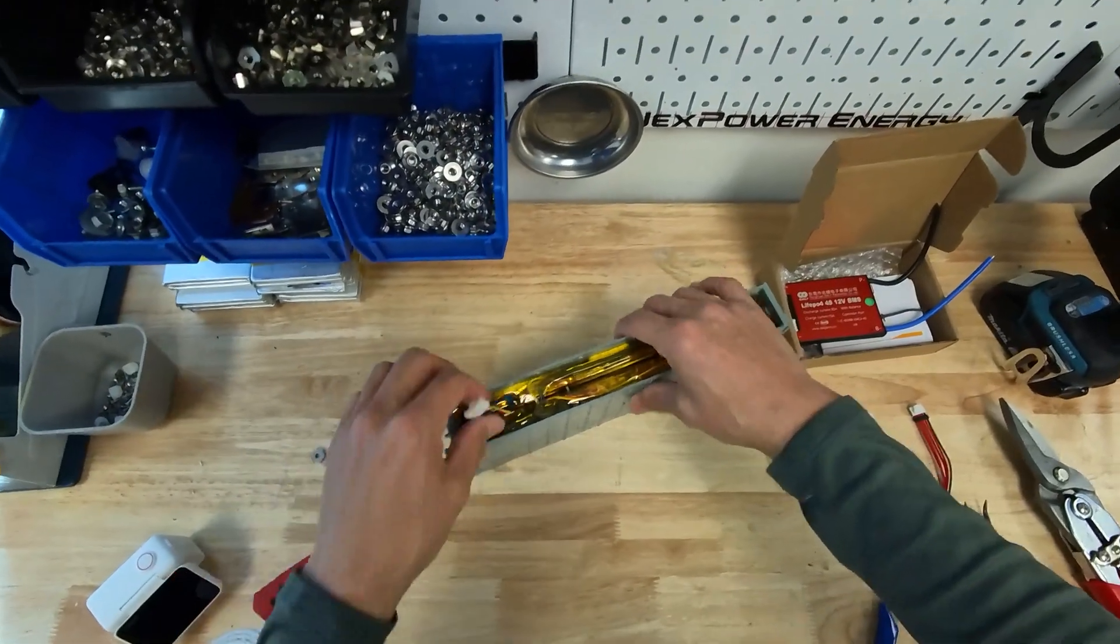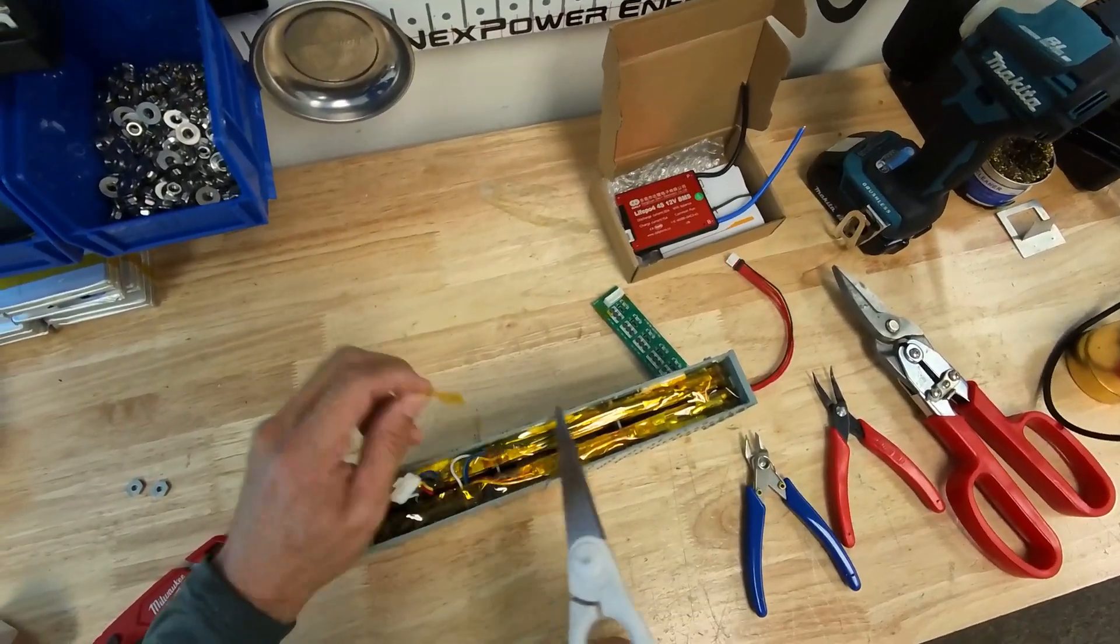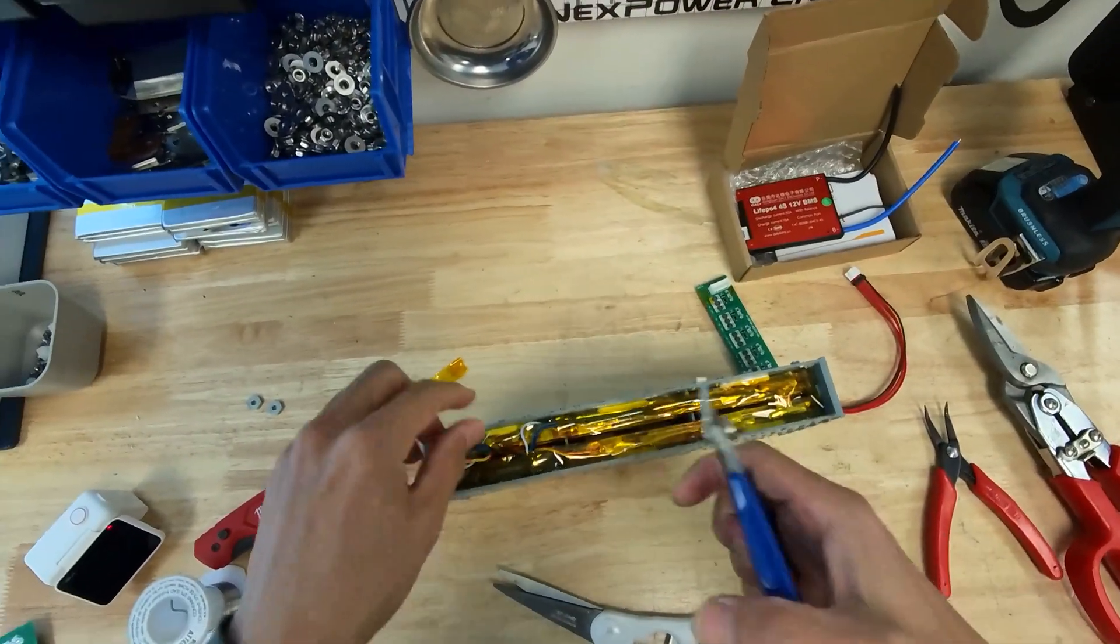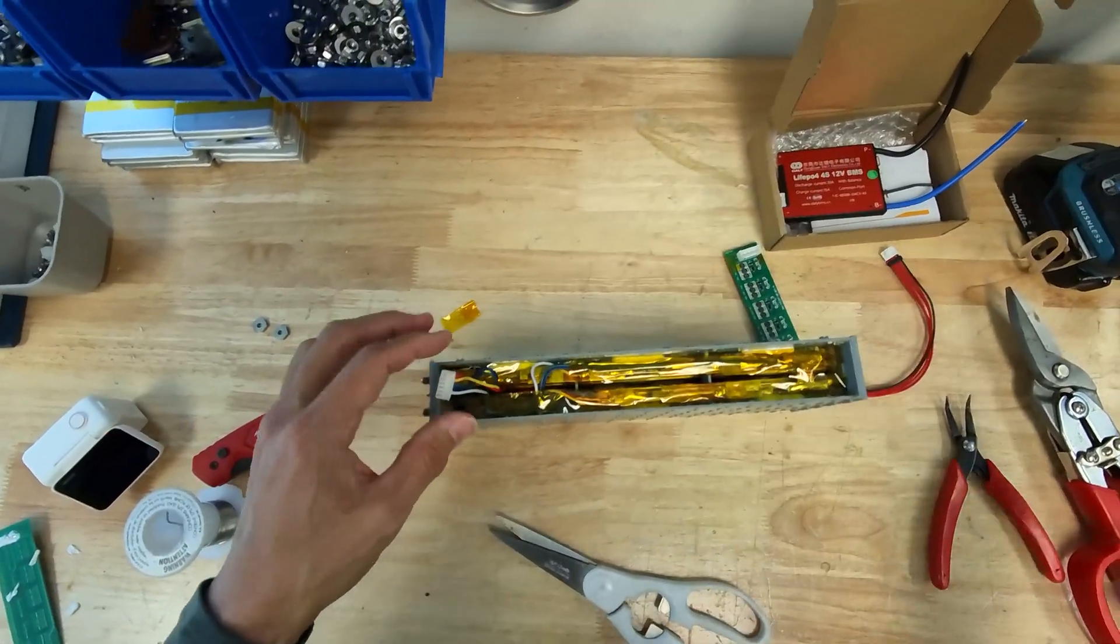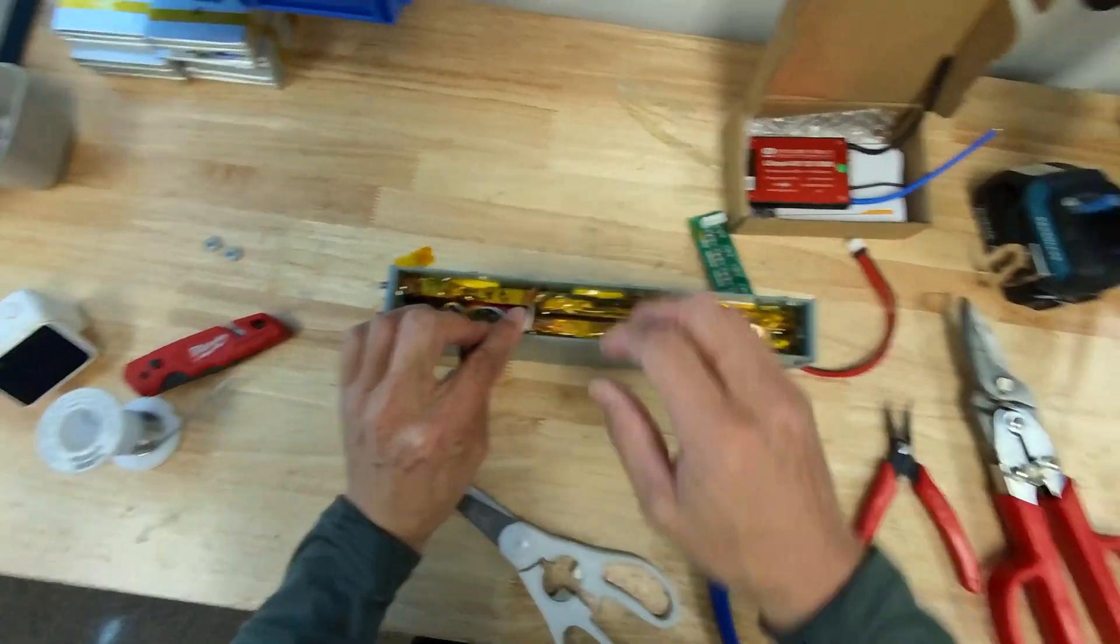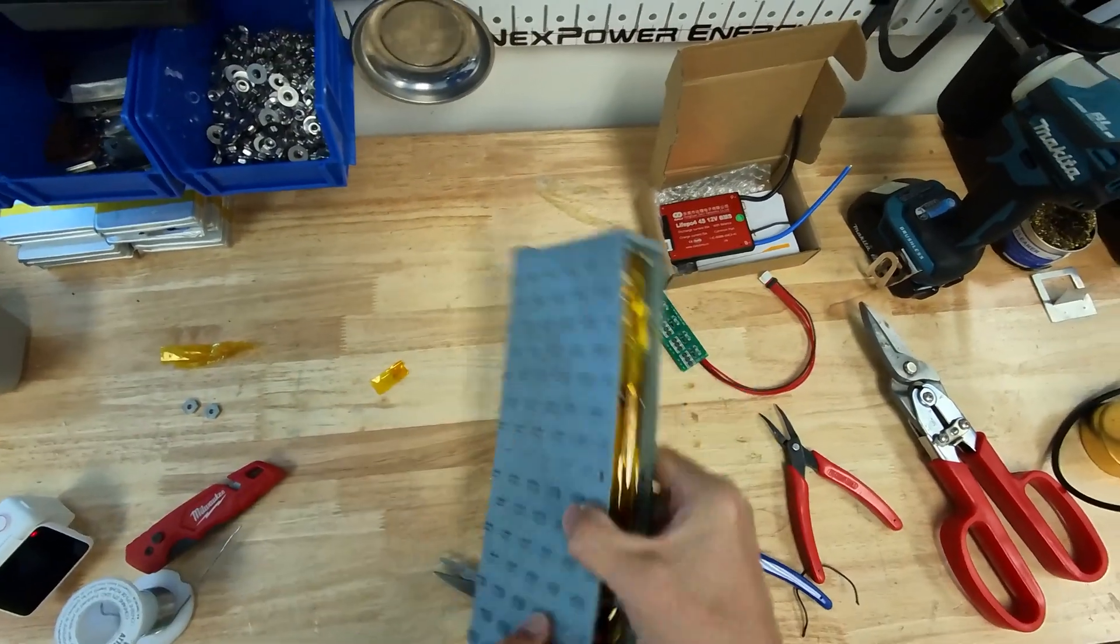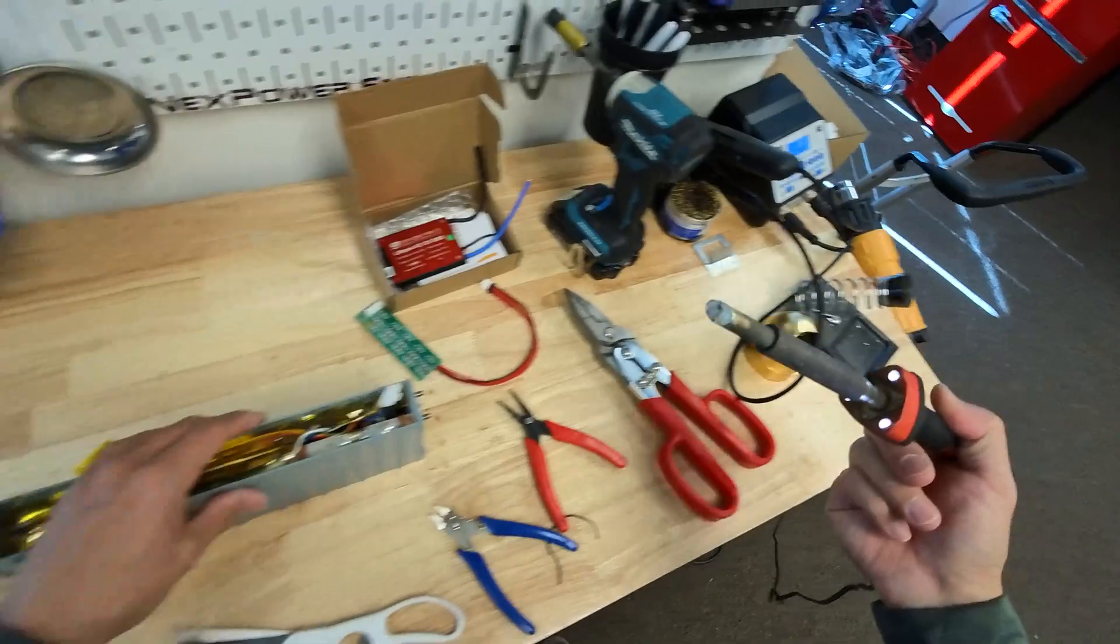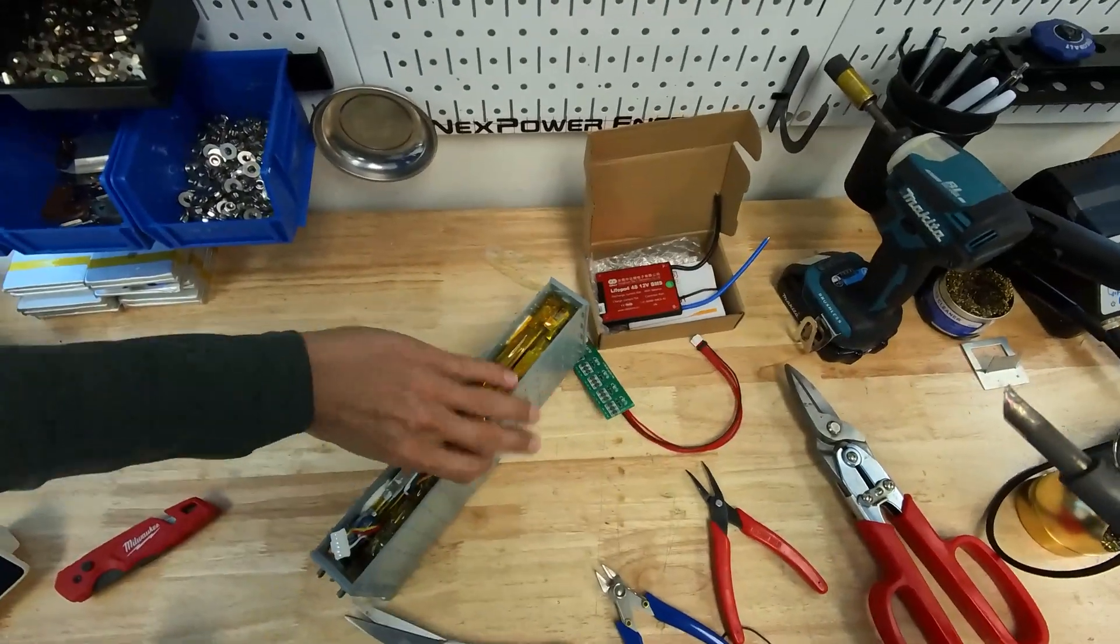Now just need to remove this cell and put the BMS in there. Let's clean it up carefully. Don't short circuit anything. And we don't need a black cable anymore. The black wire can be cut. Don't need this anymore. Here we go. Now, this should be hard enough, right? Let's give you a test. Yeah, it's very hard.